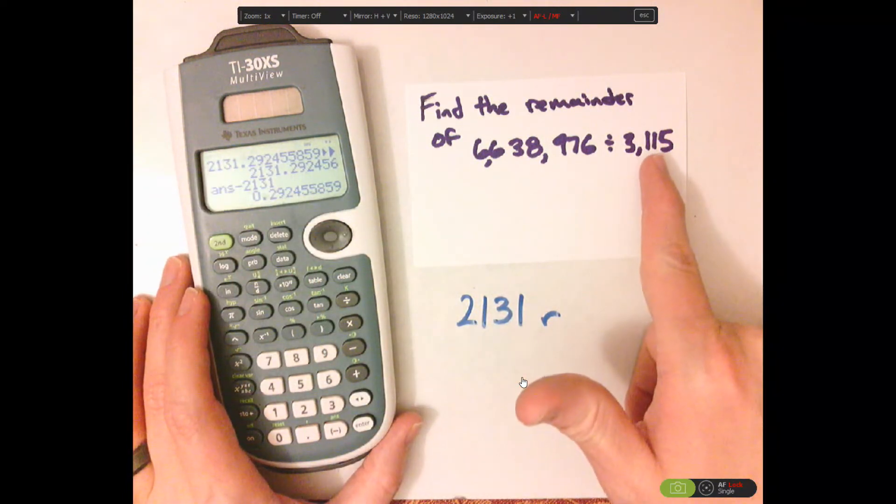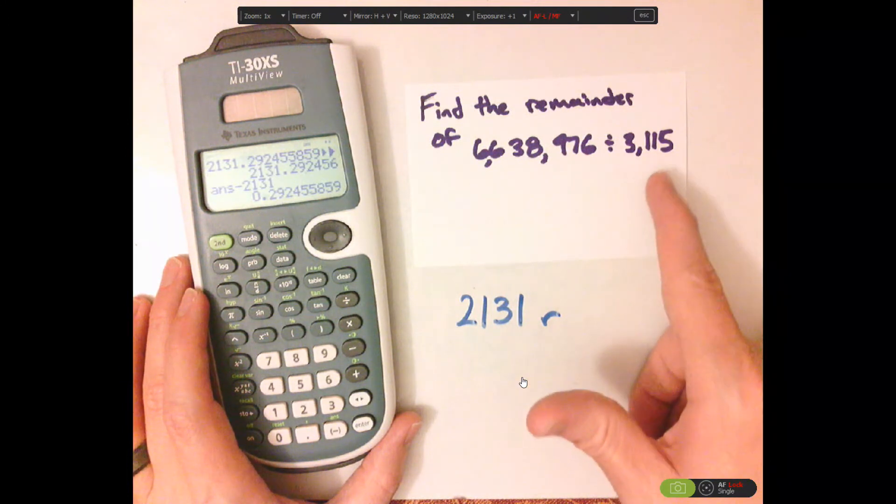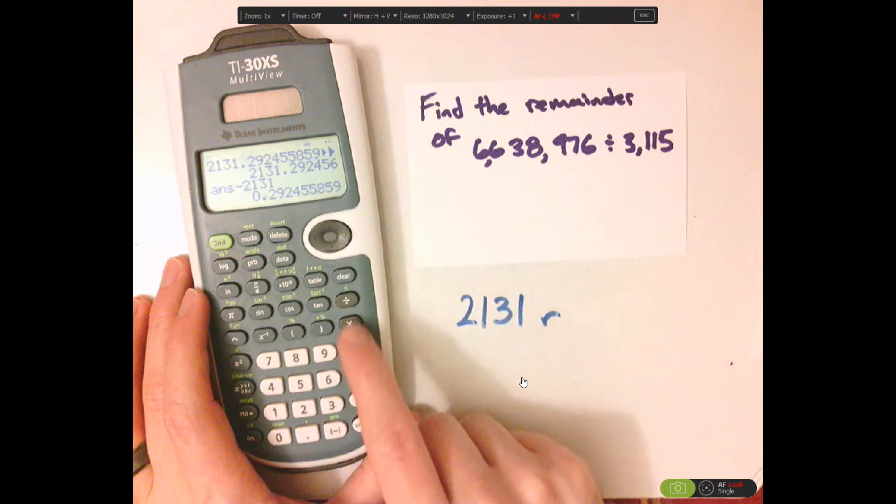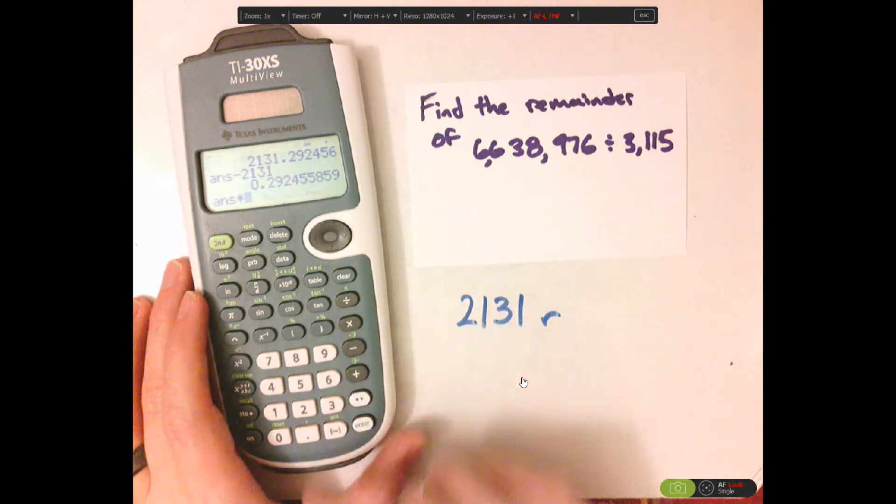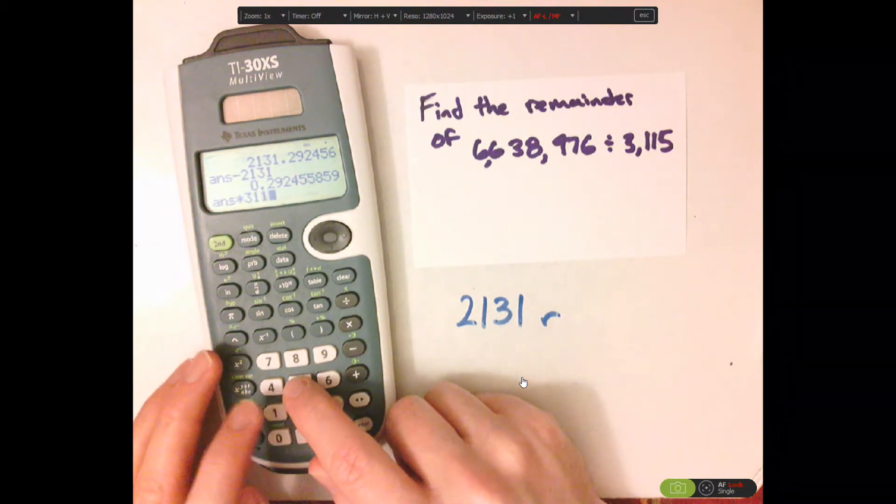And so, next what you do is you take the divisor, and you multiply it by the decimal part. So, times 3,115.